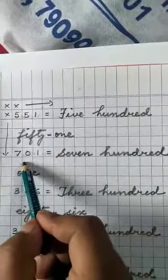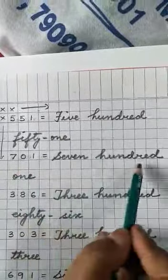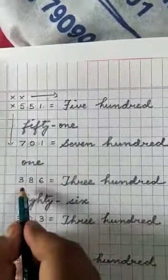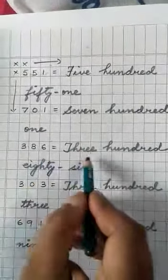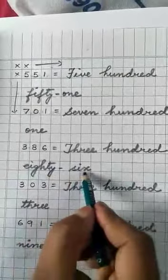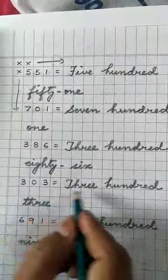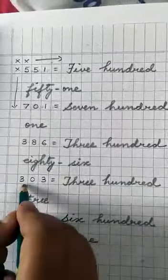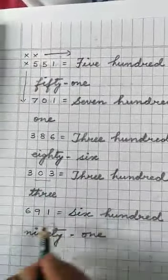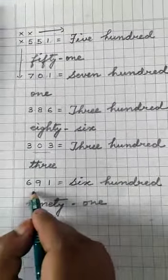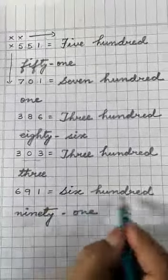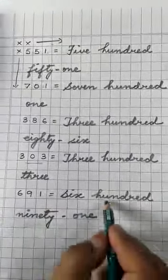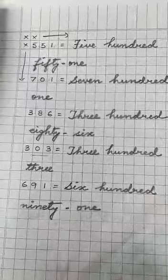Next is 701, 701. Next 386, 386. Now next is 303. Here you see 303. Last one is 691, 691, 691. 691.